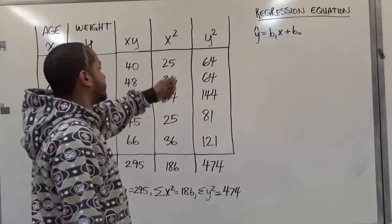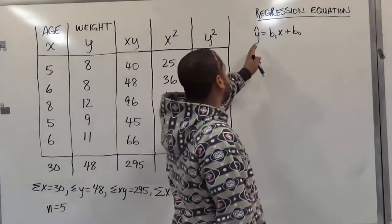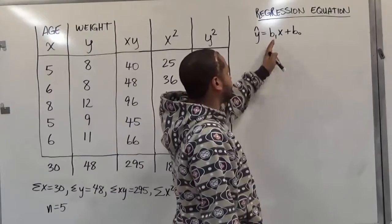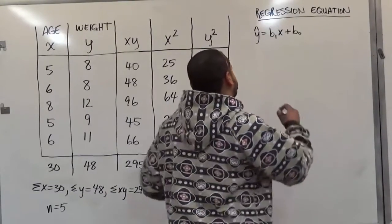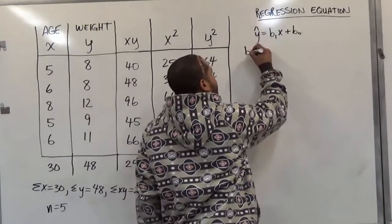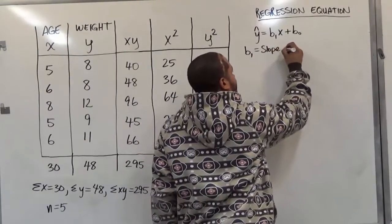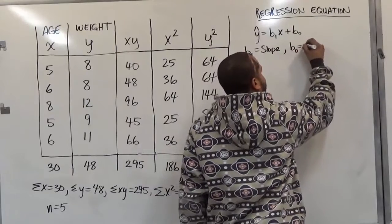Now, to get the regression equation, the predictive value equation, we have y hat equals b1, which is the slope, times x plus b0, which is the y-intercept. So here I'll just notarize that. b1 is the slope of the equation, while b0 is the y-intercept.